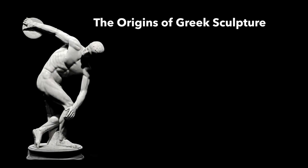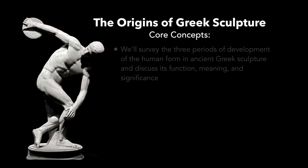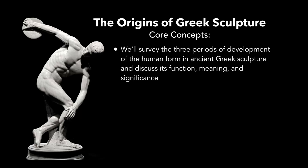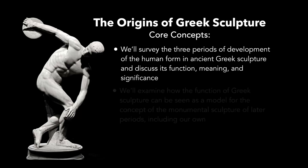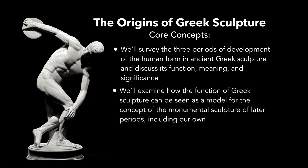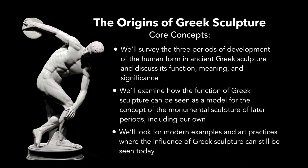Hi, Art 101. In this video, we're going to talk about the origins of Greek sculpture. Starting with core concepts, we're going to survey the three periods of development of the human form in ancient Greek sculpture. There are actually seven periods, but we're going to focus on the last three. We'll discuss what its significance was to the culture at the time, examine how Greek sculpture can be seen as a model for monumental sculpture of later periods, and look for modern examples where its influence can still be seen today.